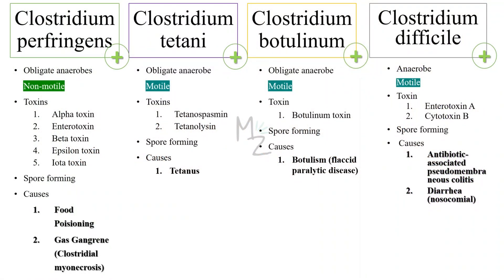For Clostridium perfringens, you can see the positive sign on the right side of every bacterium. Why? Because all of them are gram-positive rods. The second point is all of them are anaerobes. Clostridium perfringens is non-motile, while Clostridium tetani, botulinum, and difficile — all three of these are motile.